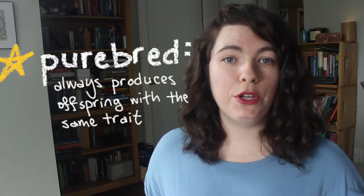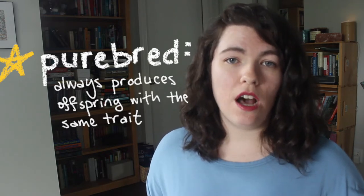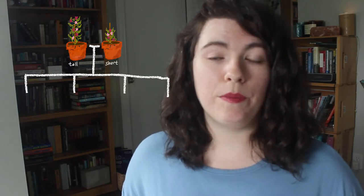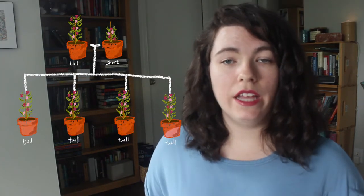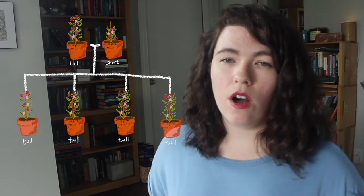One of the first people to study heredity in a scientific way was an Austrian monk named Gregor Mendel. In the 1800s, Mendel observed that some pea plants had the characteristics of their parent plants while others did not. Mendel identified that some plants were purebred — that is, they always produced offspring with their same traits. He designed an experiment where he crossed purebred tall plants with purebred short plants, and found that all of the offspring of one tall and one short plant were tall.